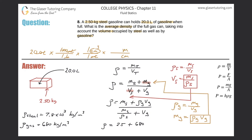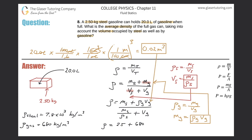Now I relate cubic centimeters to cubic meters. I put centimeters on the bottom and meters on the top — there are 100 centimeters in one meter — but since the centimeter value is cubed, I have to cube the entire conversion factor so the centimeters cancel appropriately, leaving cubic meters. Calculating: 20 times 1000 divided by 100 cubed gives 0.02 cubic meters. That's the volume to plug in.